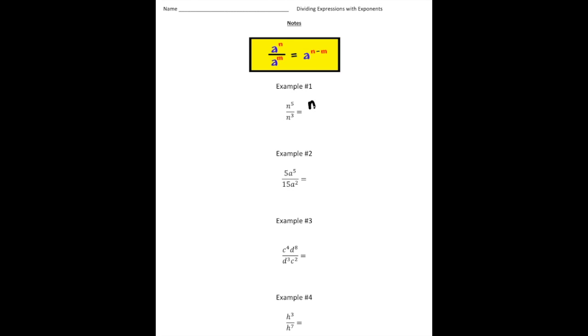So here we have n to the fifth divided by n cubed. If I expand this out, n to the fifth means n times n times n times n times n, divided by n times n times n. Now every one of these n's is a factor, so you're allowed to cross off common factors. We're going to cross off one set of common factors, another set, and then another set.